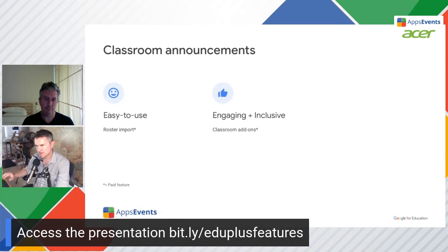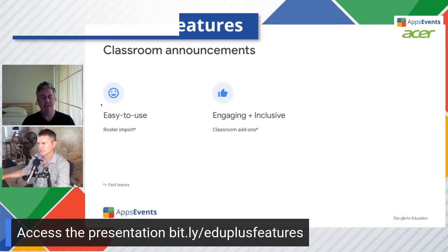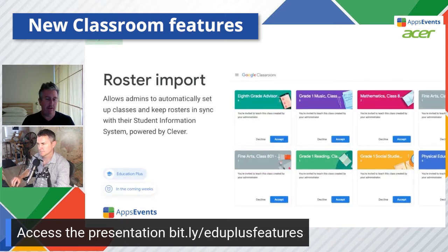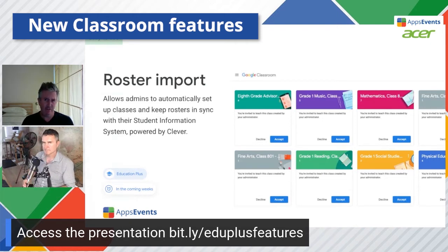Now let's get on to the new features. First up in Google Classroom: the big one everybody's excited about is Roster Imports, powered by Clever. If you're familiar with Clever, a lot of schools in the US already use it. It's going to enable any student database — SIS or SMS — to connect with Clever and import rosters directly to Google Classroom.